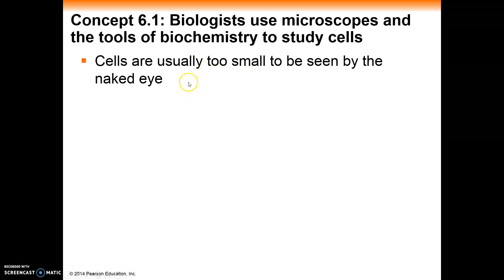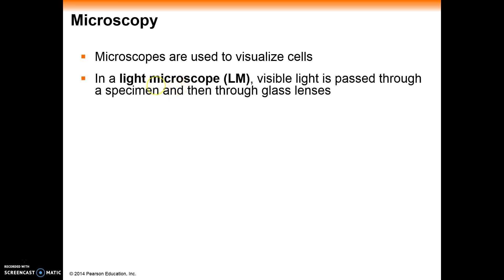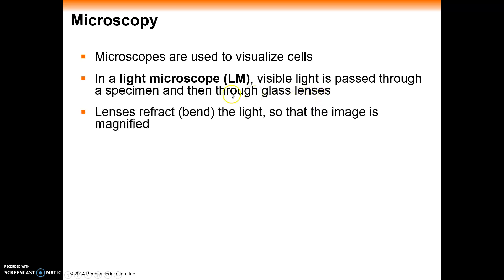There are definitely some larger egg-based cells where, if you consider all the storage material to be part of the cell, you can see that single cell. So microscopes are used to visualize these cells, and there are several different types of microscopes. To start off with, we have something called a light microscope, which utilizes light passing through an object and then focused through a series of glass lenses in order to magnify the image. The lenses refract, or bend, the light, magnifying it to allow us to take very small things and make them appear bigger.